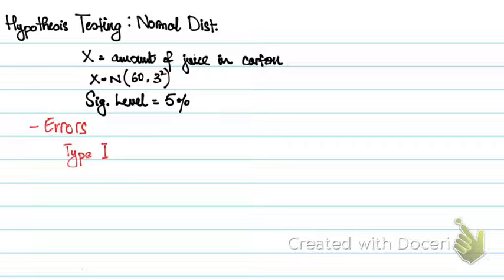When you are carrying out a hypothesis test using normal distribution, your probability of a Type I error is basically your significance level, in this case 5% or 0.05. So Type I error is you reject the null hypothesis when it is true. In this case, you say that the mean volume is less than 60 milliliters when it actually is 60 milliliters.